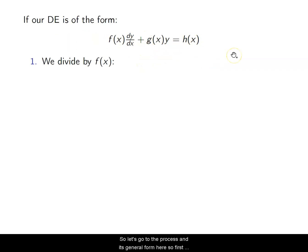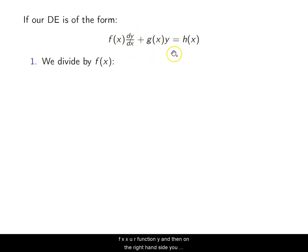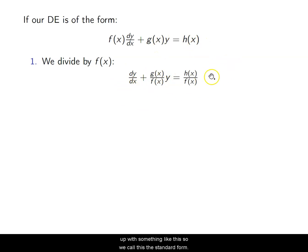Let's go through the process on this general form. The first thing we want to do is put it into what is called standard form. Standard form is when you have your highest order of the DE isolated — it has no function coefficient. So you divide everything by this first function of X. You end up with DY over DX plus G(X) over F(X) times Y equals H(X) divided by F(X).